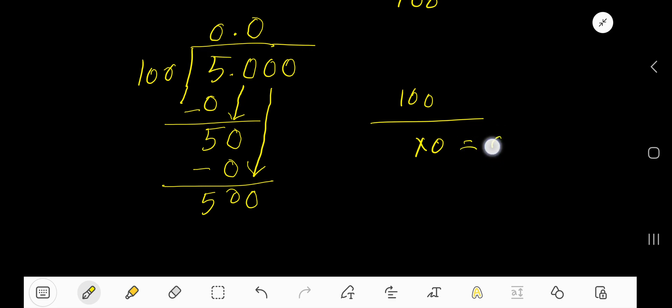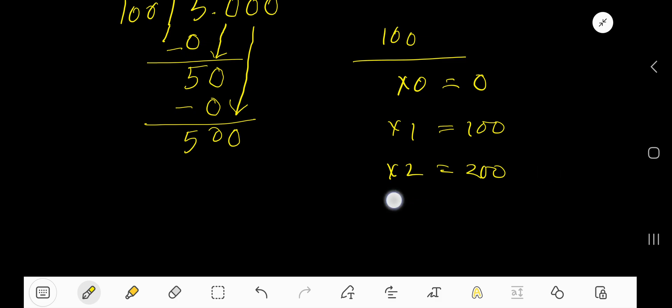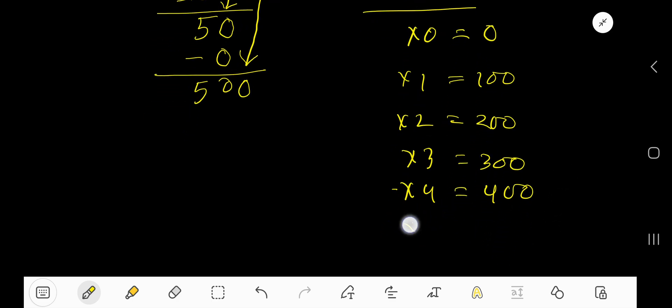100 times 0, you know 0. 100 times 1, just add 100 with the previous step. So, we are getting 100. 100 times 2, just add 100 with the previous step. That is 200. 100 times 3, just add 100 with the previous step. 300. 100 times 5, 500.